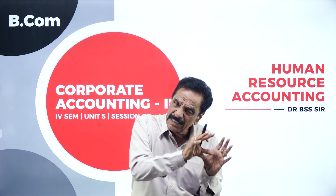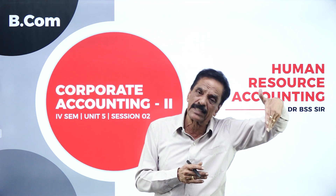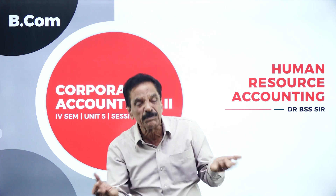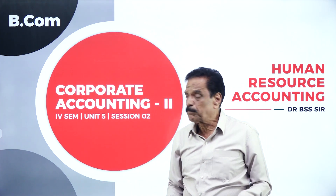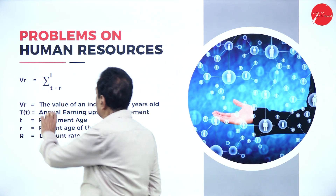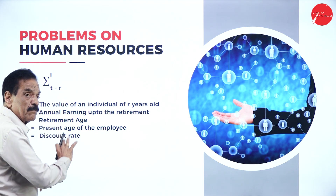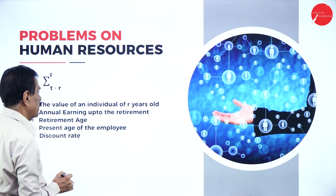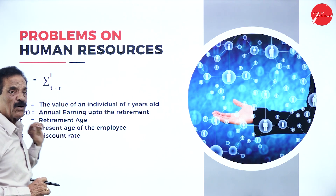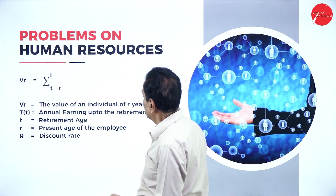We will look at how much money an employee is going to get at the time of retirement — if the total life or retirement age is 60 years. Previously it was only 58 years. We are going to solve problems on human resources using the formula: Sigma I, from t minus r, where I is the value of an individual of r years old, with annual earning up to retirement, retirement age, present age of the employee, and discount rate.